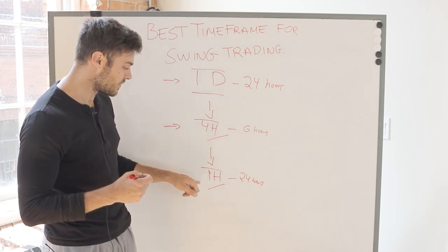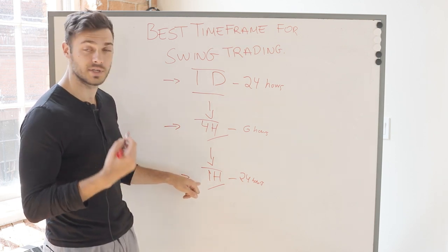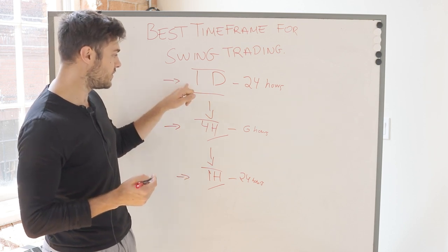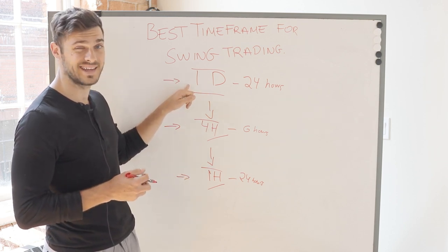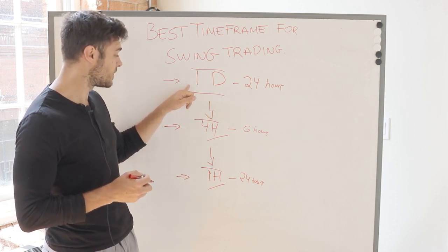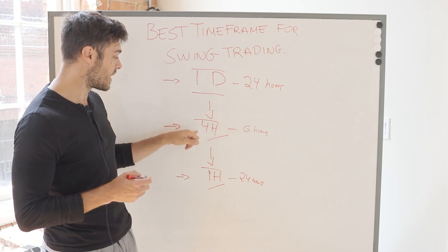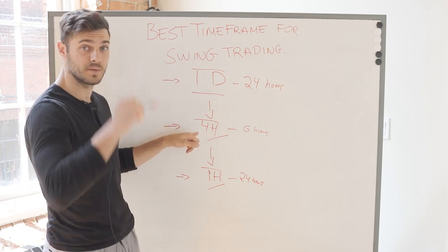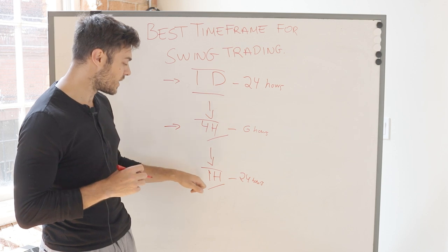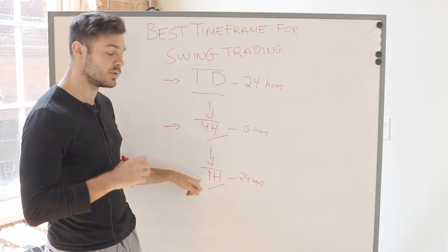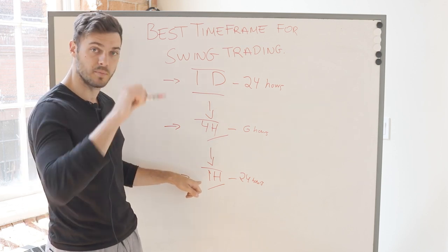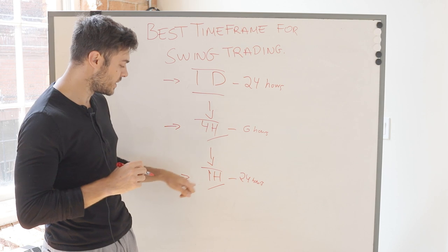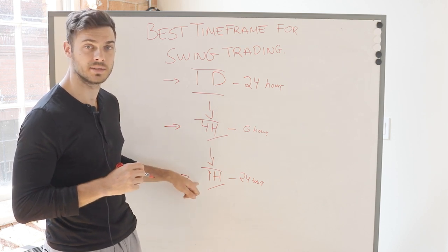On the one-hour time frame you're essentially looking for the same thing. If you've got a bullish reversal on the daily chart, on the four-hour chart you want to see a market structure break to the upside confirming that, and on the one-hour time frame you're just going to look for pullbacks into support on the four-hour time frame in order to execute your trades.